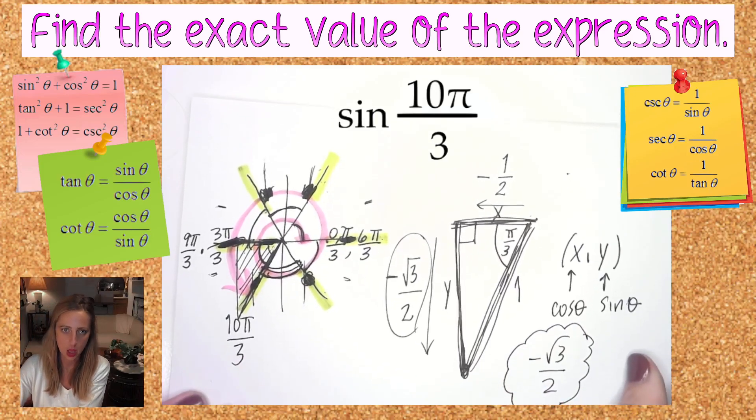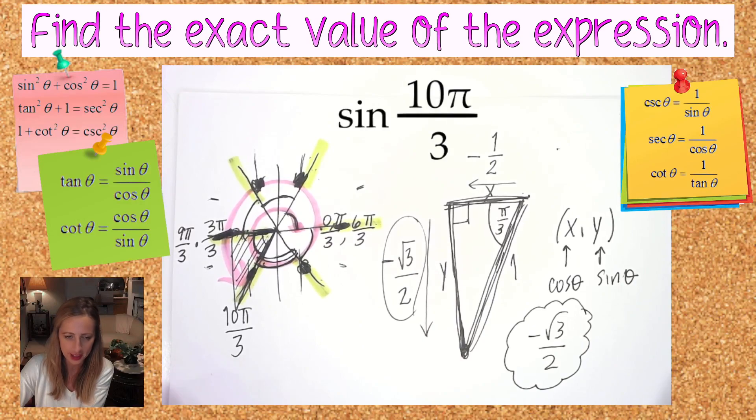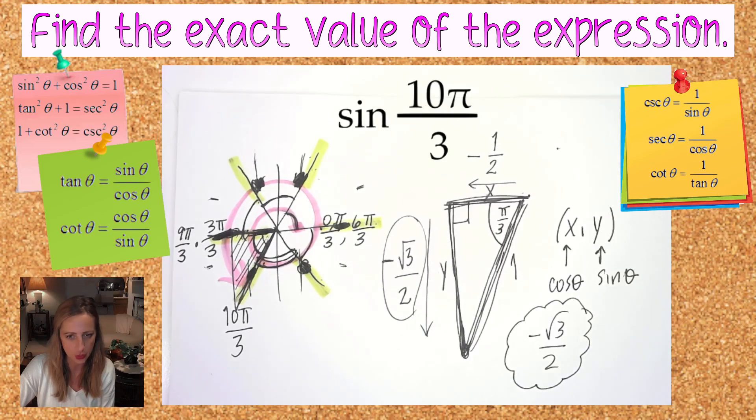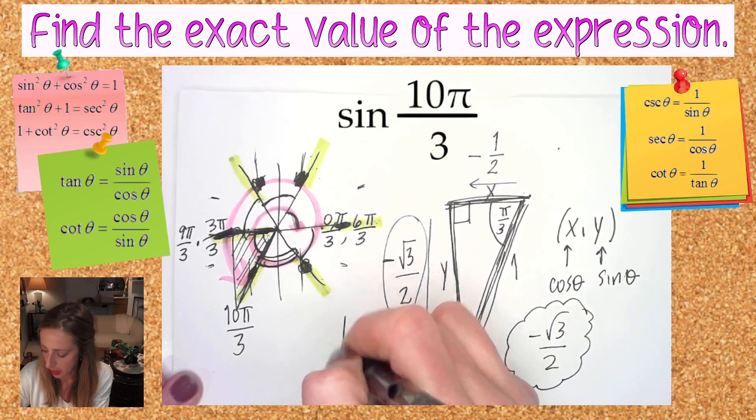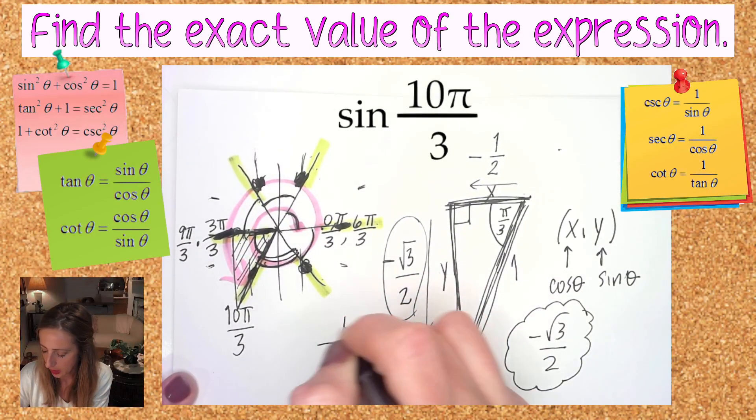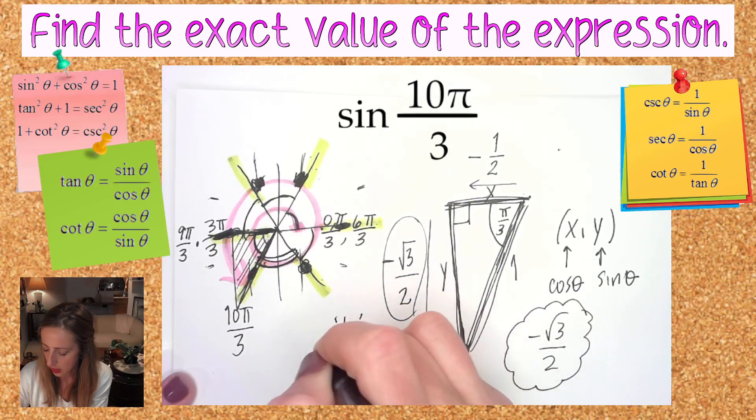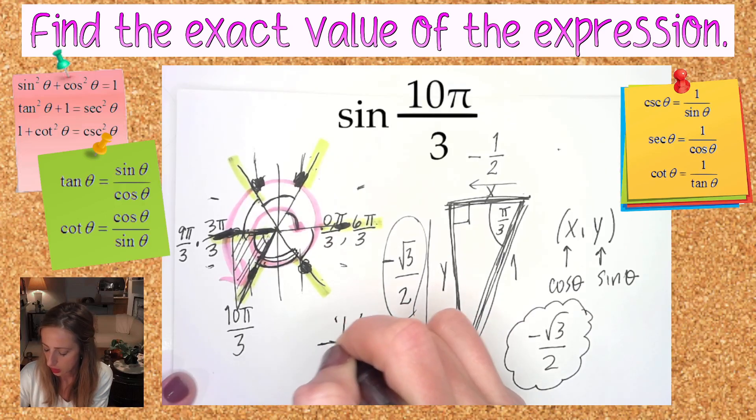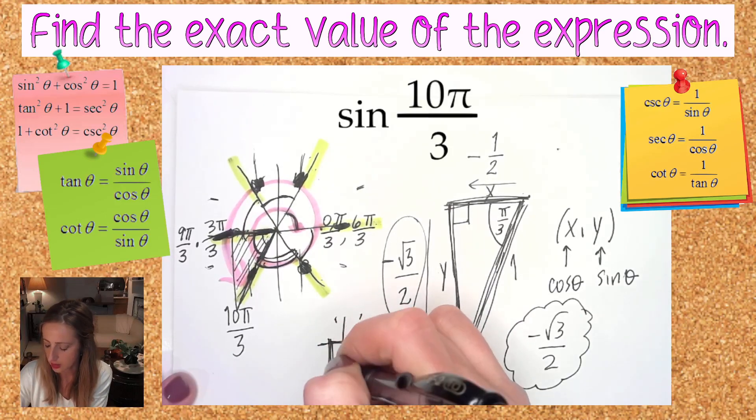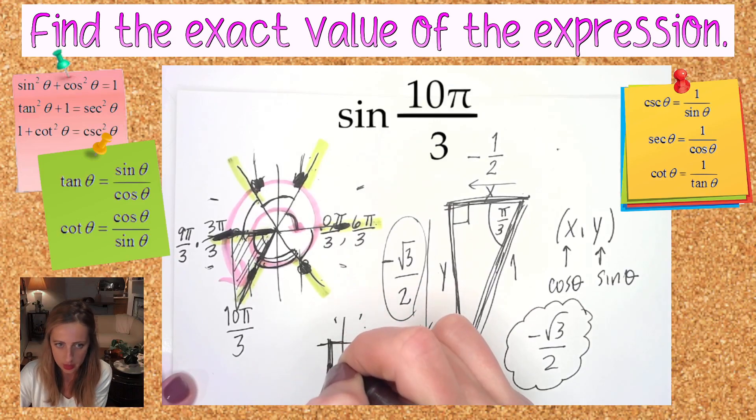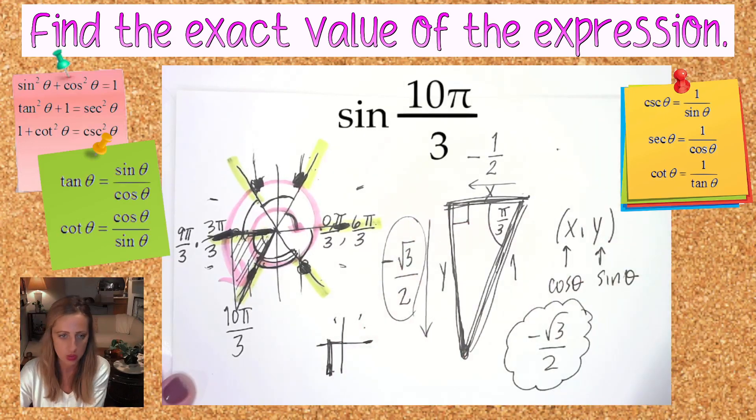Would it take me this long to do this for myself? Absolutely not, but hopefully you watched it in double speed. I would really just figure out, count out like 6π over 3, 7, 8, 9, 10. Left a little, down a lot. Sine is the up and down, it's down a lot. So it's negative root 3 over 2. Done. Moving on.